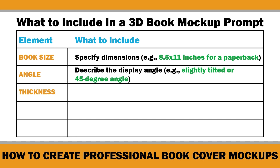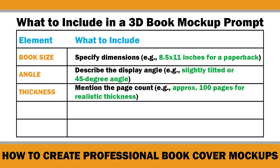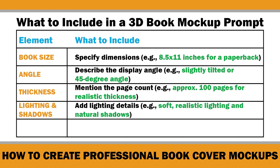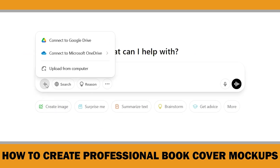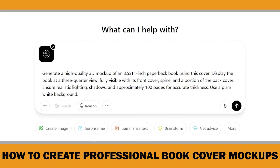The third point is thickness, which refers to the number of pages. For accuracy, you might include something like: the book should have approximately 100 pages for realistic thickness. Then we get to lighting and shadows — mention realistic lighting to make the mockup look natural, such as with soft realistic lighting and shadows. Finally, background — indicate what kind of background you want, like a plain white background or something more specific like on a wooden desk with a laptop. Using a prompt like this will generate a sharp, professional-looking 3D mockup in just a few moments.